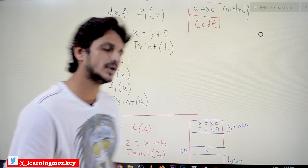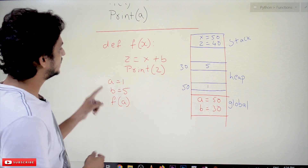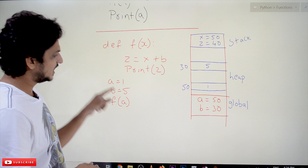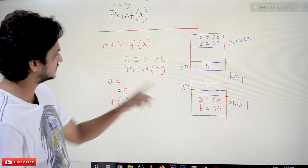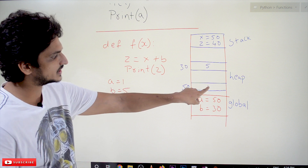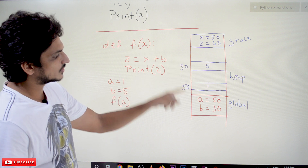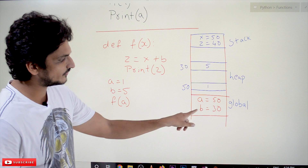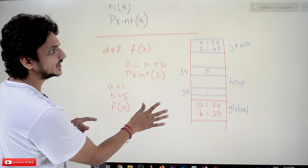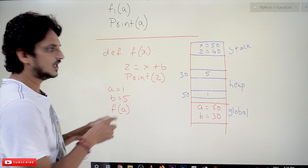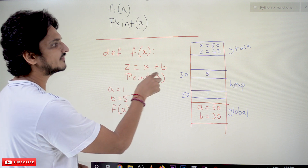Let us take one more example to understand how functions execute in order and how memory is allocated. Here a = 1, b = 5, and we call f(a). These are two global variables. The object 1 is given heap space at location 50, and the object 5 is given heap space at location 30. The references are maintained in global space: a = 50, b = 30. When the function is called, it assigns stack space: x = 50, and z is computed with z referencing location 40.